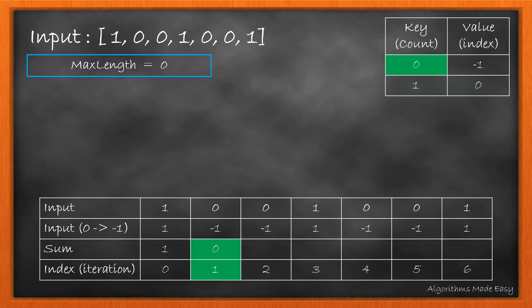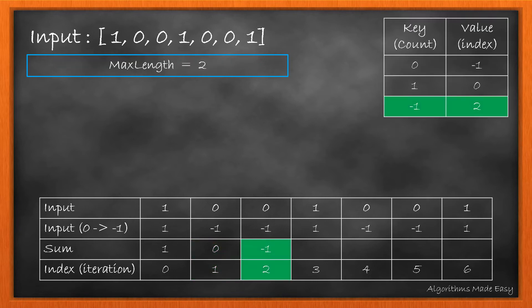For index 1, the sum becomes 0 as we add –1 to 1. As we can see, 0 is already present in the map, so we calculate the max length. Max length will be maximum of max length and the current index minus index from the map against 0. We see max length becomes 2.